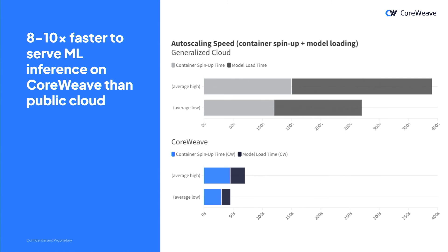Overall, when it all comes together, spinning up a machine learning container on the public cloud takes about 3 to 5 minutes, whereas it takes about 30 to 45 seconds on our cloud. A 3 to 5 minute wait to serve a chat app creates a bad user experience, and for businesses doing business-critical logic the latencies are unacceptable. This is why we're a specialist cloud — we focus on specific use cases like ML, AI, and VFX rendering, and optimize every layer of the stack and all the tooling to be the best at it.